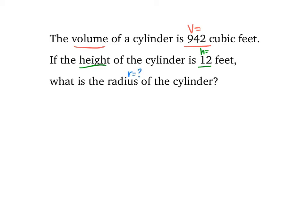Again, starting with the formula. The formula for a cylinder is V equals the area of the base times the height.